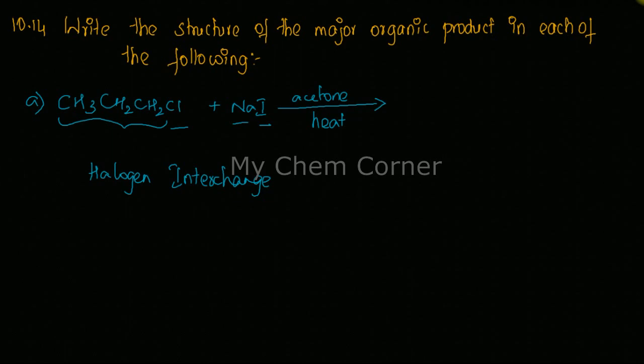This compound here you have 1, 2, 3 carbons, and on the first carbon you have a chlorine atom. So here we will have this as 1-chloropropane.